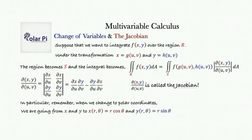Specifically, x is going to become r cos θ and y is going to become r sin θ. Notice that in becoming r cos θ, x is a function of two variables r and θ, and likewise with y. So r is like the u and θ is like the v.